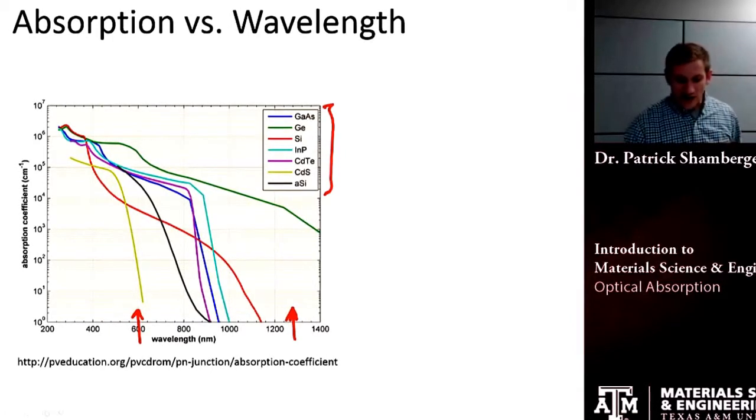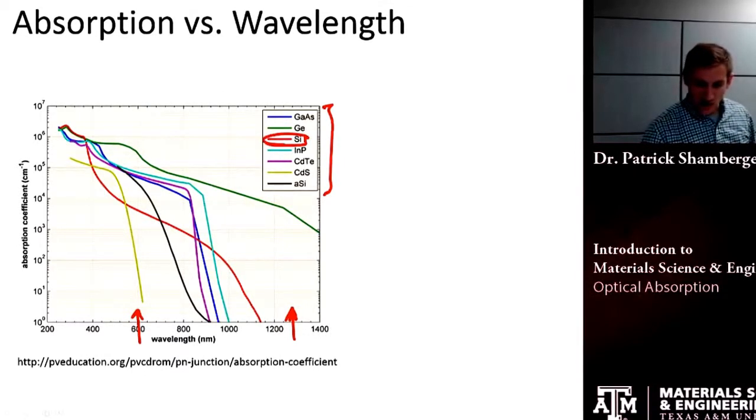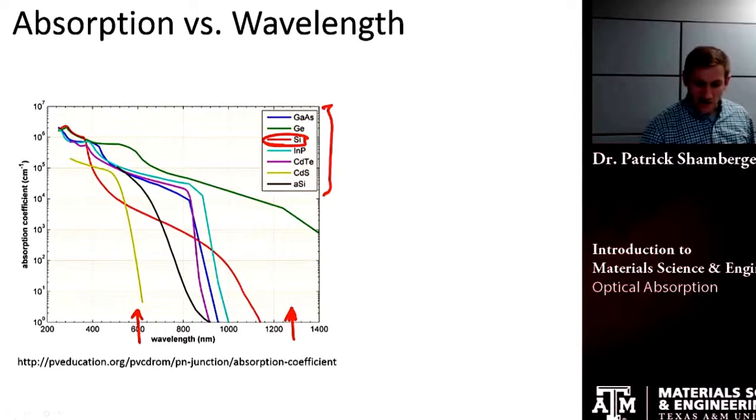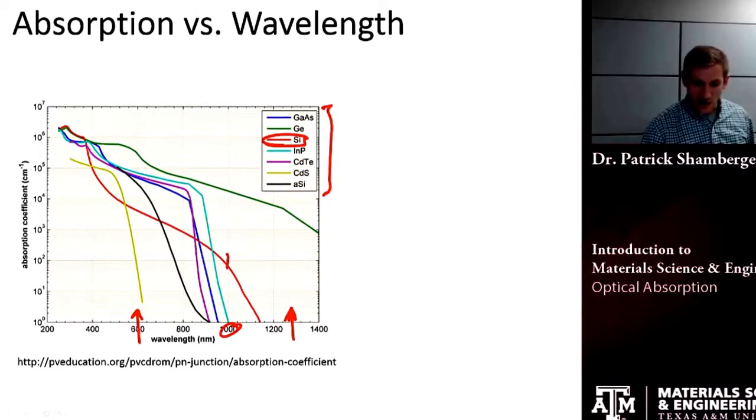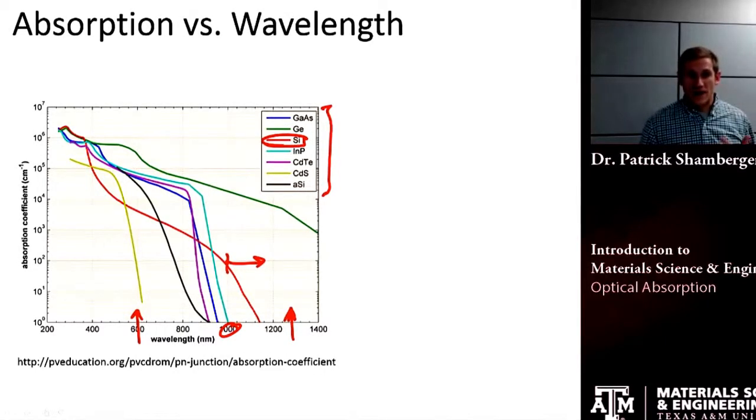The way to tell that is that in some material, for example, let's look at silicon here. In silicon, if I have wavelengths that are greater than about a thousand nanometers, I'm not absorbing much of that light.